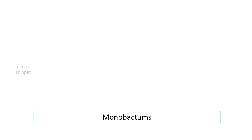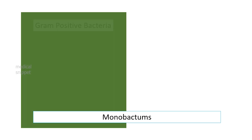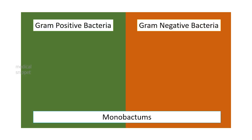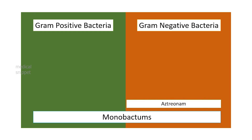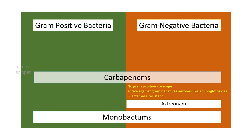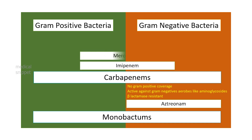Monobactam is a beta-lactam antibiotic without the other ring, hence it is called a monobactam. Aztreonam has no gram-positive coverage; it is active against gram-negative aerobes similar to aminoglycosides, and it is beta-lactamase resistant. Carbapenems like imipenem and meropenem are extremely potent, broad-spectrum beta-lactam antibiotics with gram-positive, gram-negative, and anaerobic coverage; they are resistant to most beta-lactamases but not active against MRSA.